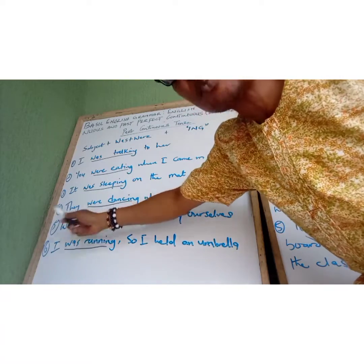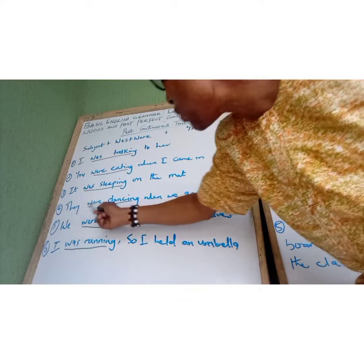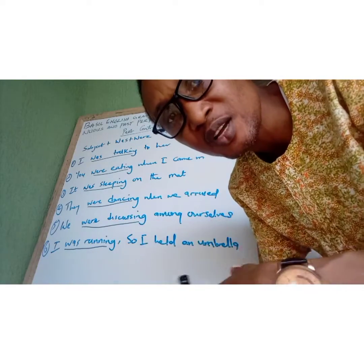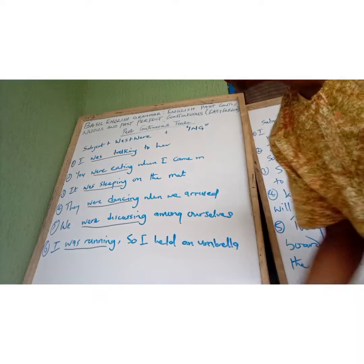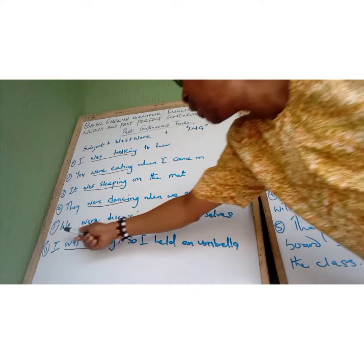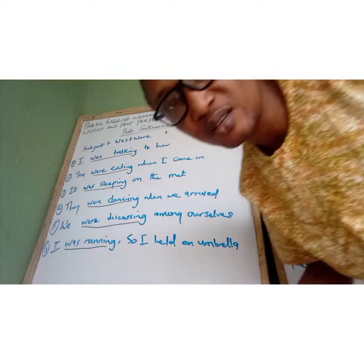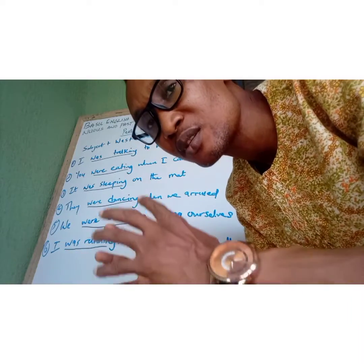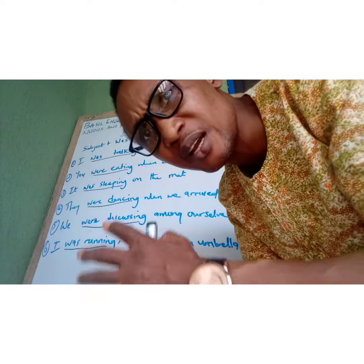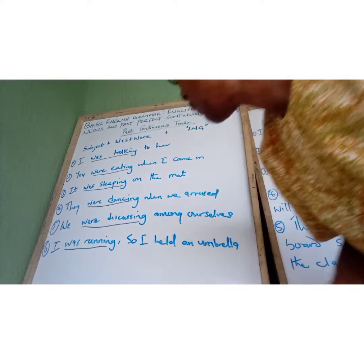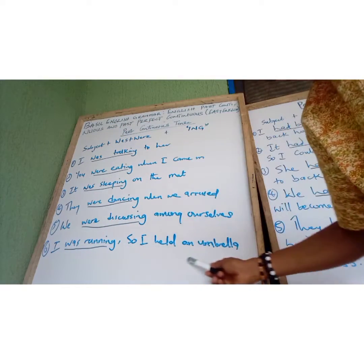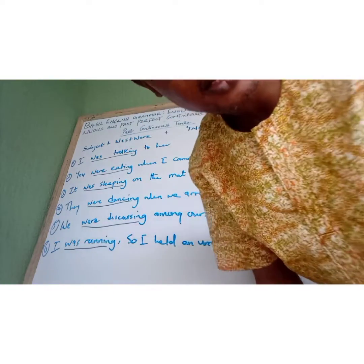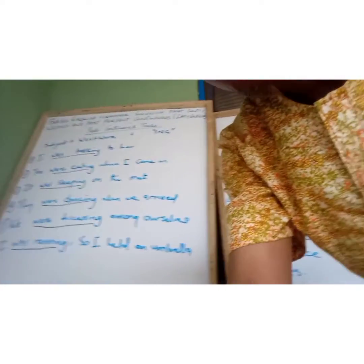This next one uses a plural pronoun: 'They were dancing when we arrived' — we met the students dancing when we arrived. Then: 'We were discussing among ourselves' — we sat down and we were discussing among ourselves since there was nothing else to do. We had completed our responsibilities and had to sit down and discuss. Then: 'I was running' — I had an umbrella, I was running. That is the past continuous tense.